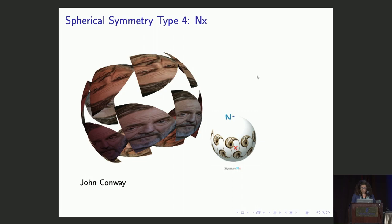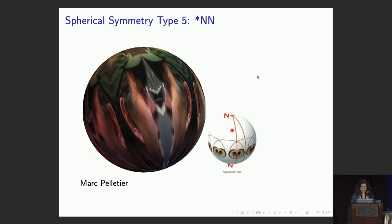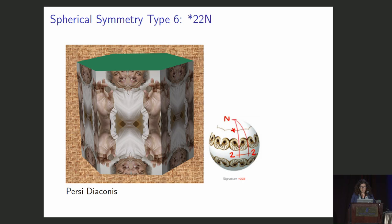We could also do mirrors with vertical mirror lines along meridians. So here we have star N-n symmetry, kind of looks like a rosette at the north pole and the south pole, shown by Marc Pelletier.